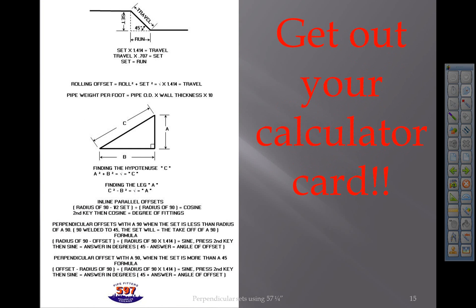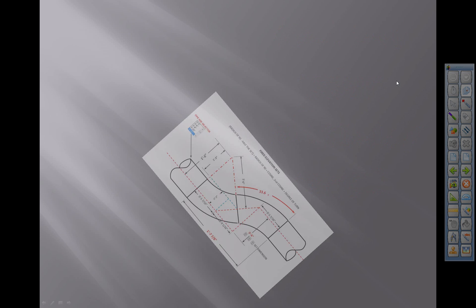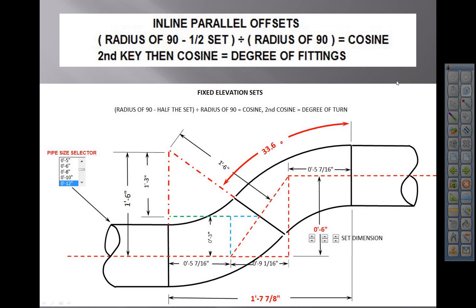We can check it with the formula, very easy. It's an inline parallel offset, which is in parenthesis: radius of the 90 minus half the set, close it out with parenthesis, and then divide by the radius of the 90. That will give you a cosine factor.